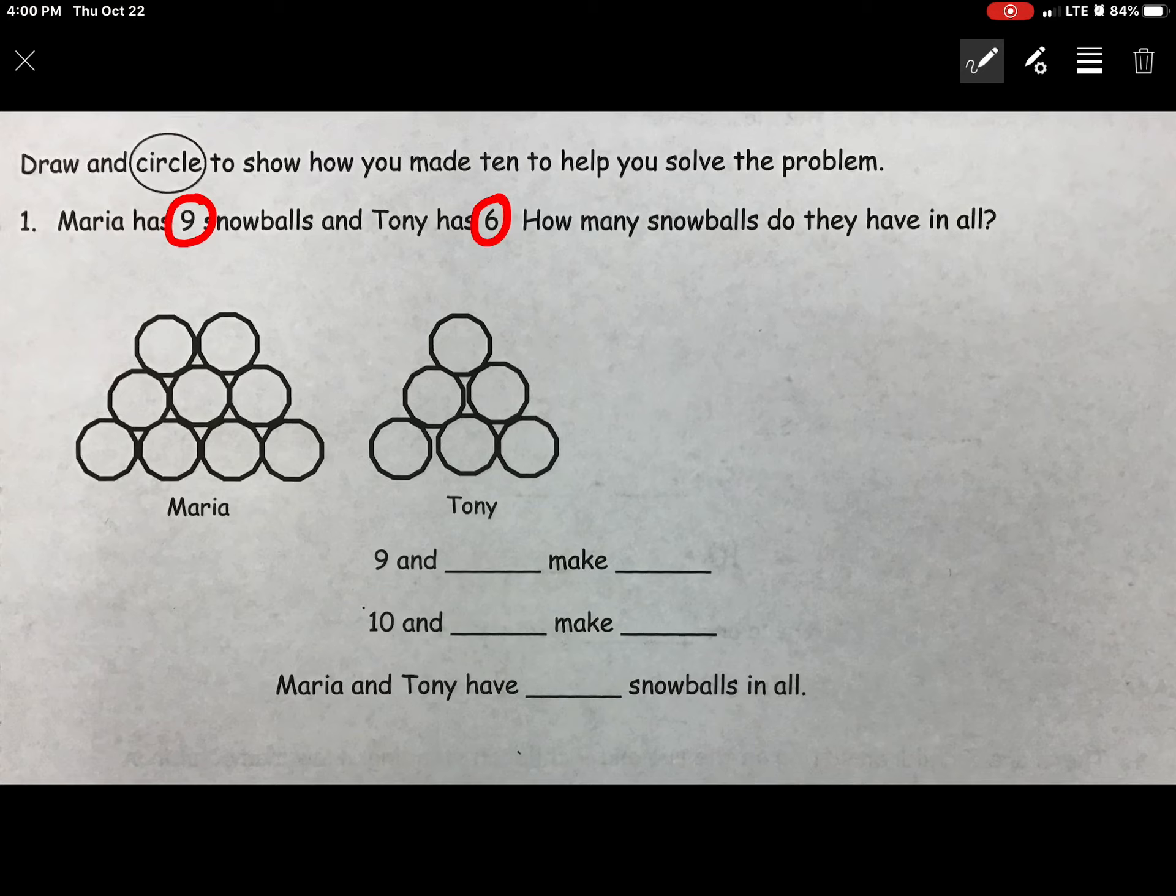In this case nine is closest to 10. So we're going to think who is nine's buddy to make a 10? And that is one. So we know that we need to take one of the snowballs from Tony's group and add it to Maria's to make a 10. So we do this by drawing a circle around our 10. We're going to take one of Tony's and we're going to group it with Maria's. As soon as we do that we want to double check that we've circled the right amount. So we're going to count 1, 2, 3, 4, 5, 6, 7, 8, 9, 10. Now that we know that we have 10 we're going to label it.